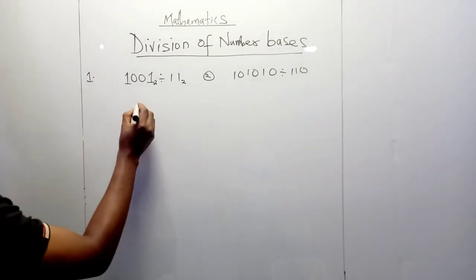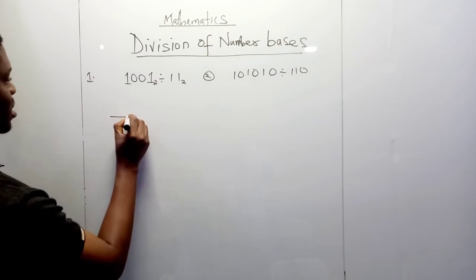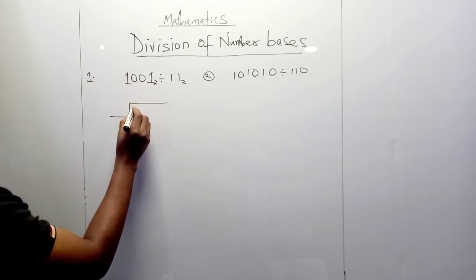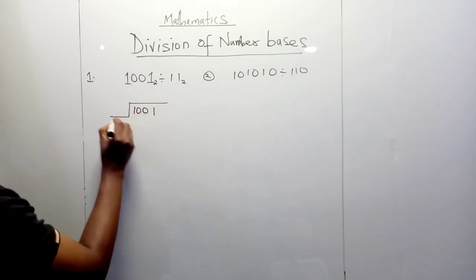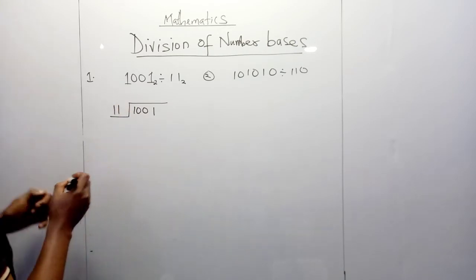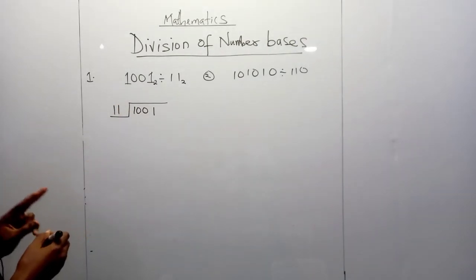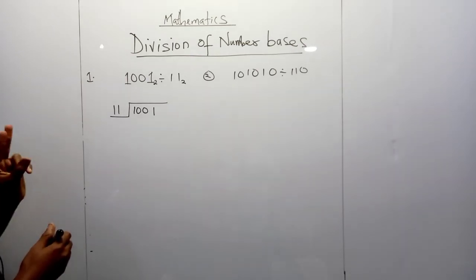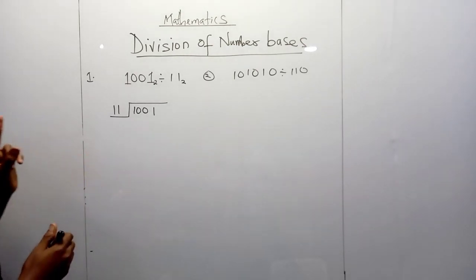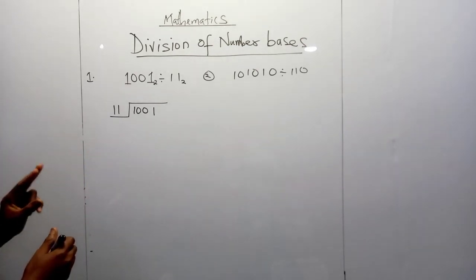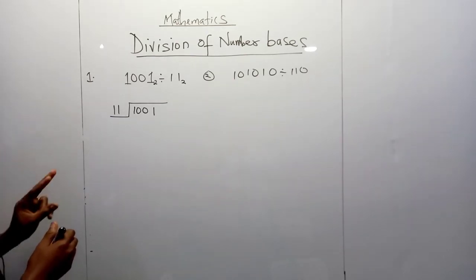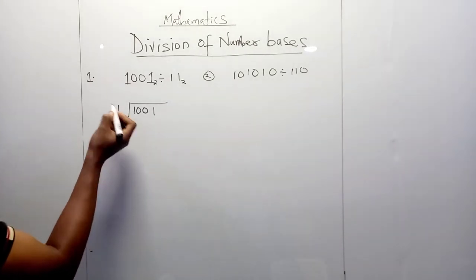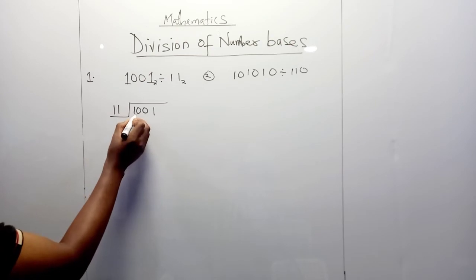We're going to look at the examples we have on the board. The first question we have here is 1001 divided by 11. These numbers are all in base 2. The divisor is outside. A two-digit number is smaller than a three-digit number, and here we have a two-digit divisor dividing a four-digit number.